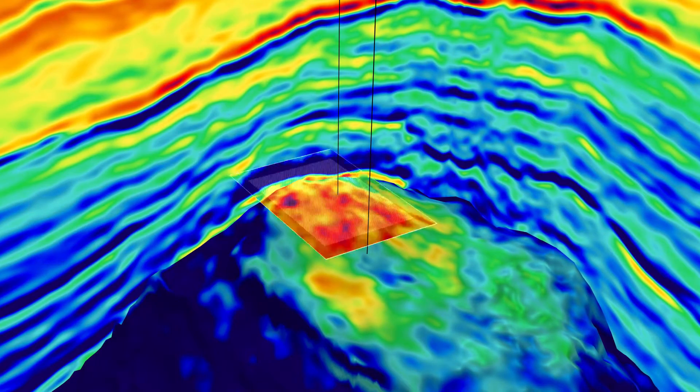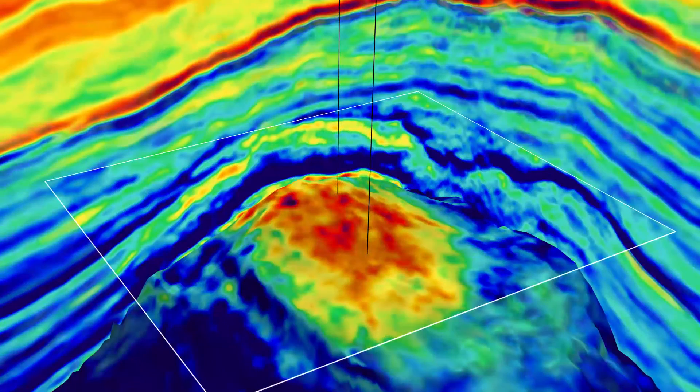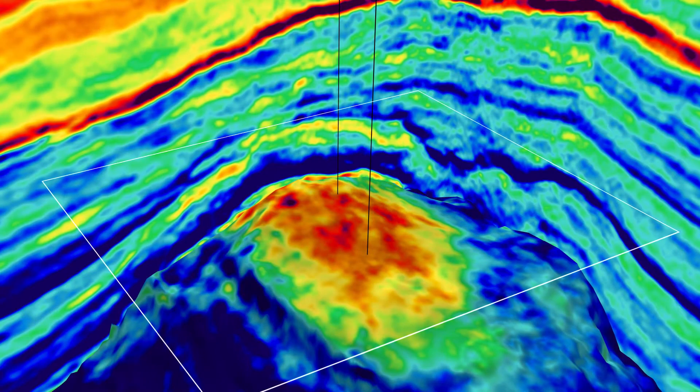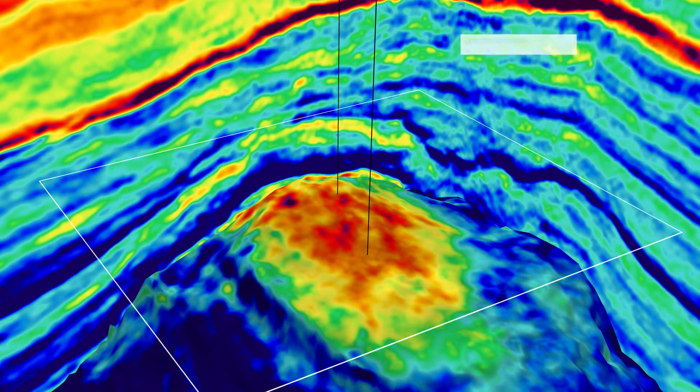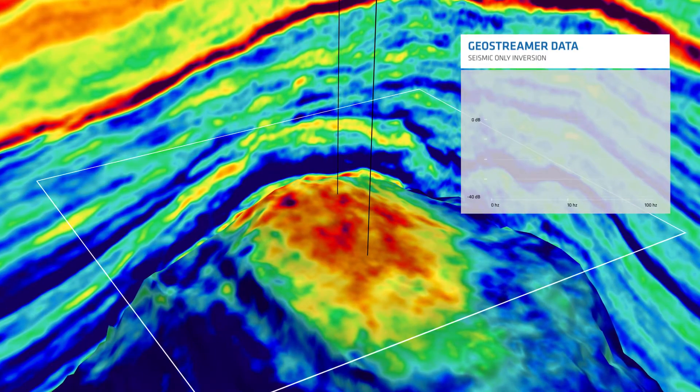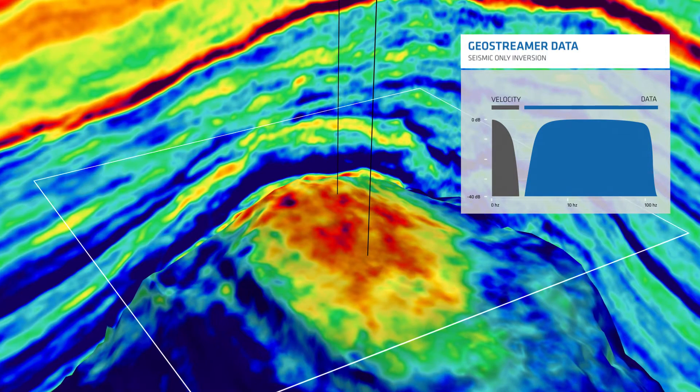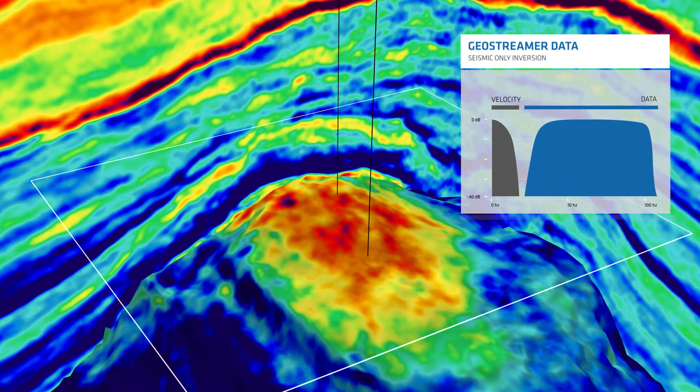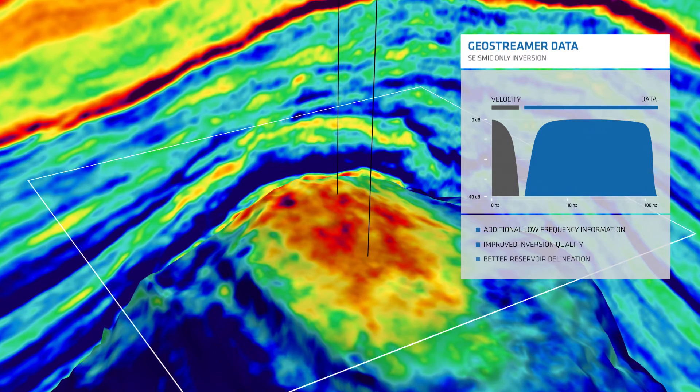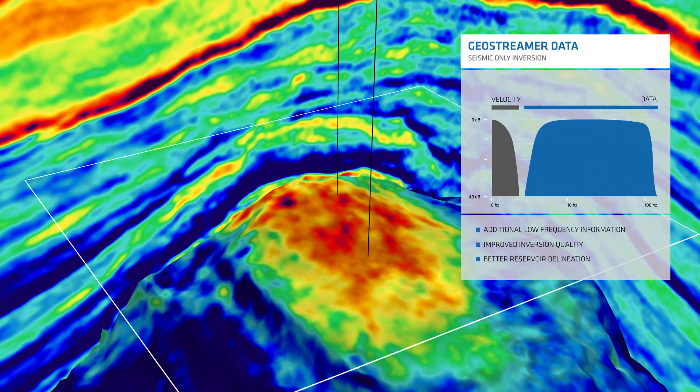Inversion of broadband geostreamer data results in a much improved impedance distribution and better reservoir delineation. The acoustic impedance values are now well correlated with the overall geometry of the reservoir, although no well information was used.